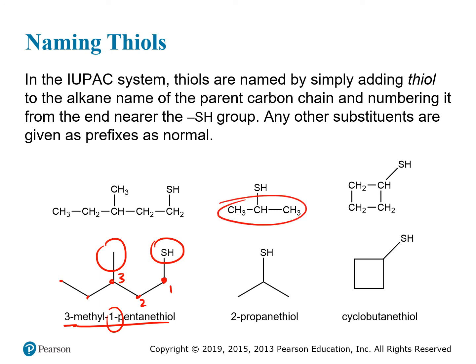Here we have a three-carbon chain, propane. You would start numbering from either end and get the same answer — the thiol group is on the second carbon, so this is 2-propanethiol. Again, you don't drop the E; you leave it and just add thiol to the end. For a cyclic alkane with four carbons, that's cyclobutane. Since the thiol is the only substituent, no number is needed — all positions are equivalent — so we call it cyclobutanethiol.